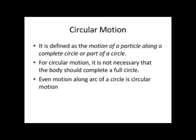Now what is circular motion? When a particle moves on the circular path with constant speed about a fixed point, that is called uniform circular motion. And for circular motion, it is not necessary that the body should complete a full circle. Even motion along arc of a circle is a circular motion.